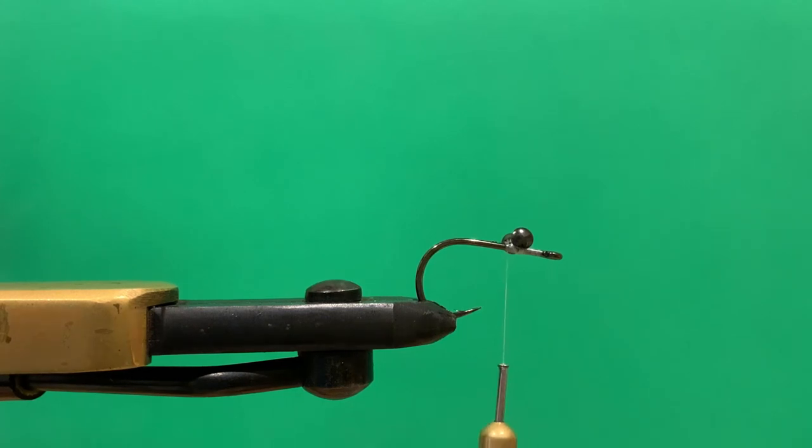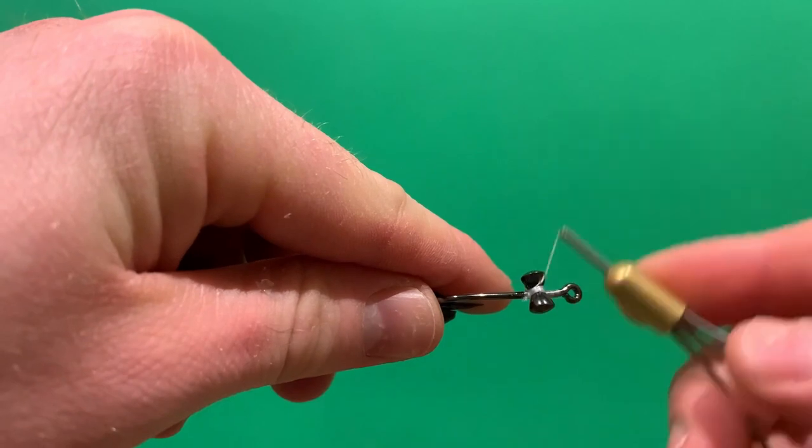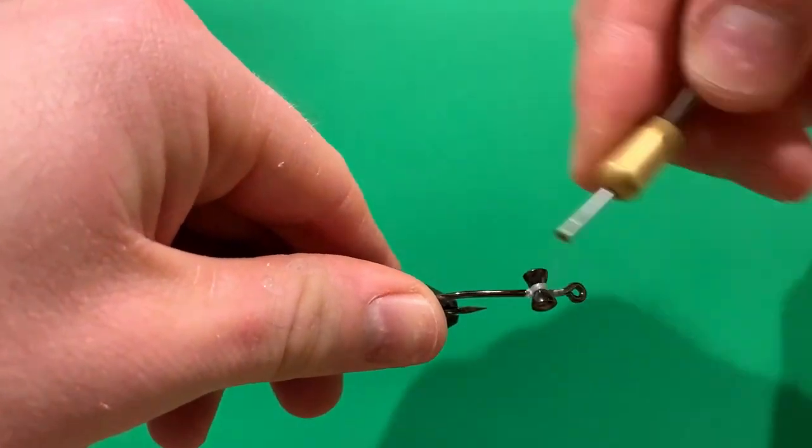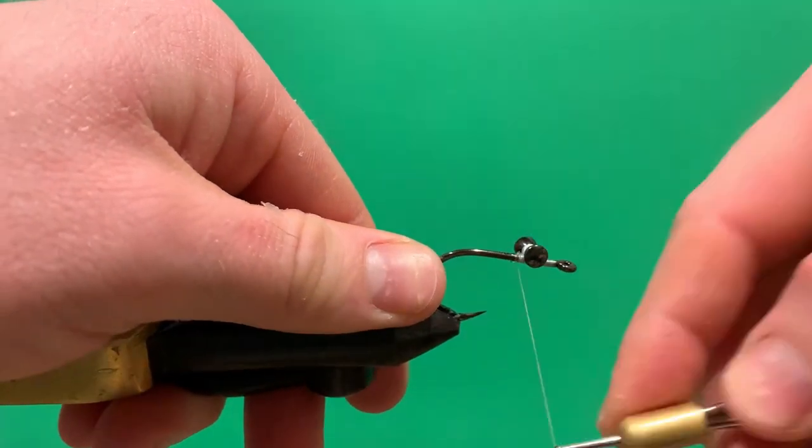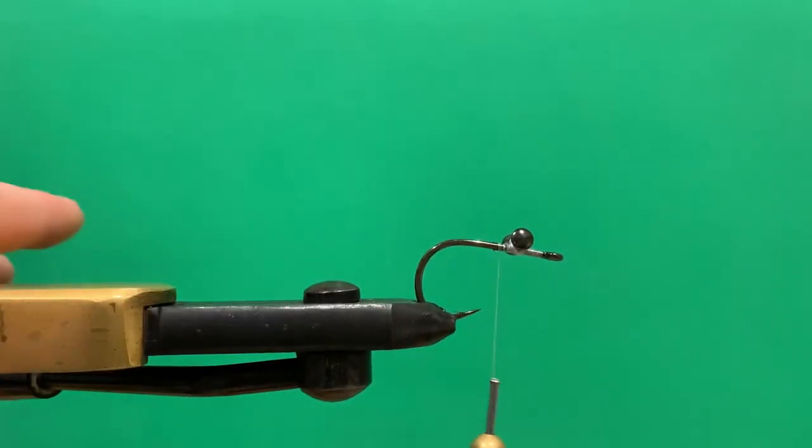Just to help cover over the wet super glue, we'll get one or two more turns over these eyes and then move the thread right to the back of the eyes here.